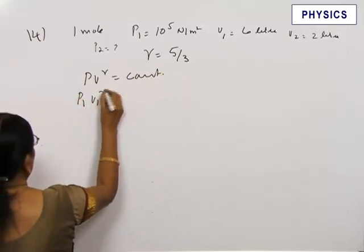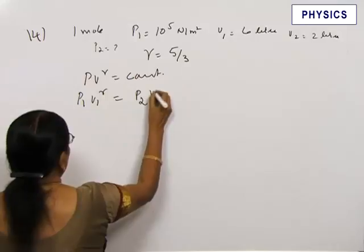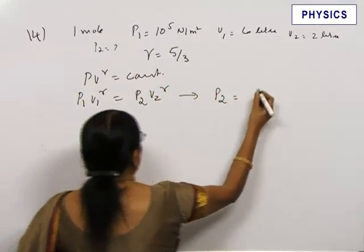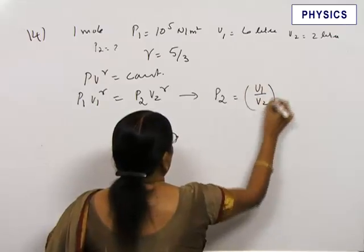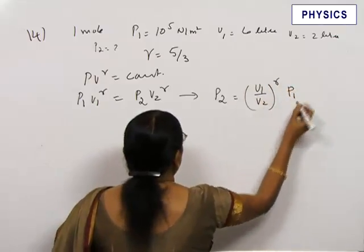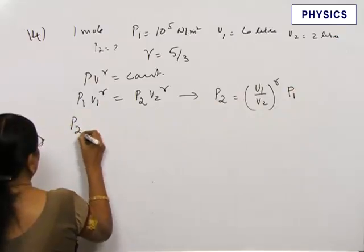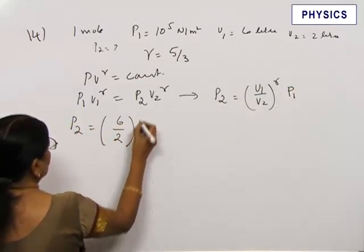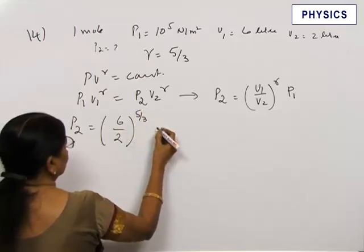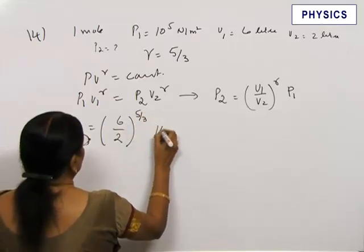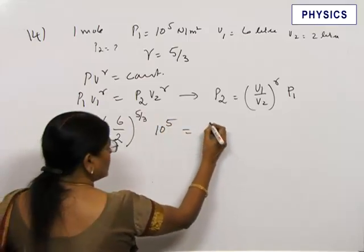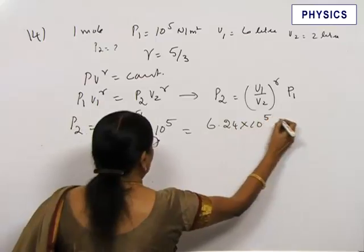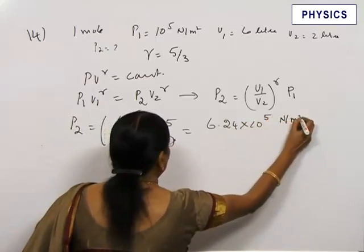So P1V1^gamma equals P2V2^gamma gives P2 equal to (V1/V2)^gamma times P1. P2 equals (6/2)^(5/3) into 10^5. We get this as 6.24 × 10^5 Newton per meter squared.